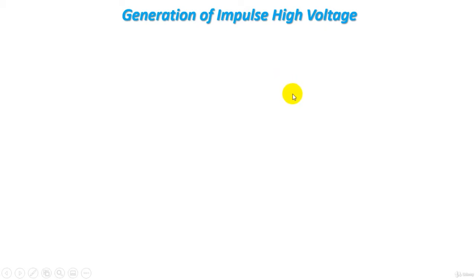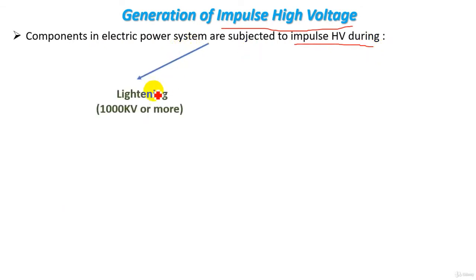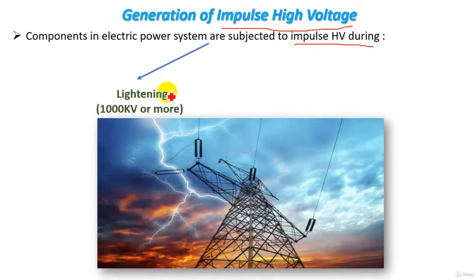This tutorial is about impulse high voltage, which is very important to study and understand because components in electric power systems are subjected to it during lightning. When lightning strikes, power system components can be subjected to 1000 kilovolts or more. This voltage is very high and may cause damage, so high voltage components should be tested under this voltage — meaning we must produce impulse high voltage in the lab to test insulators and high voltage components.